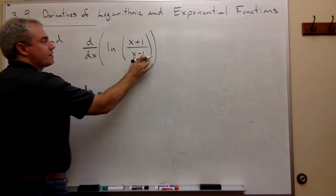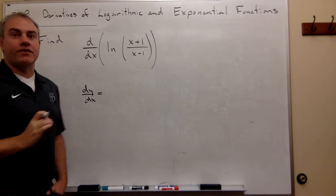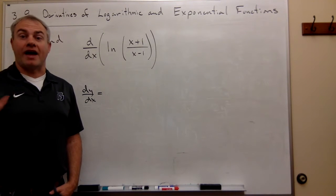And if we have ln of something, then the very first thing that we want to write down is 1 over that thing.